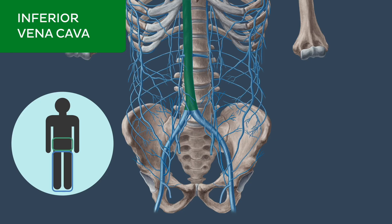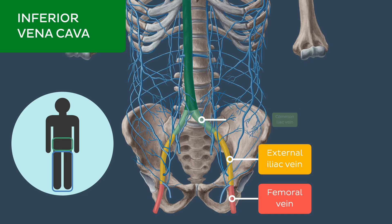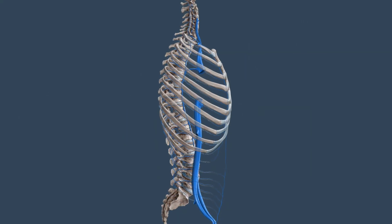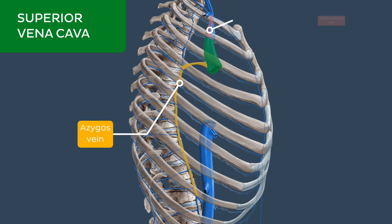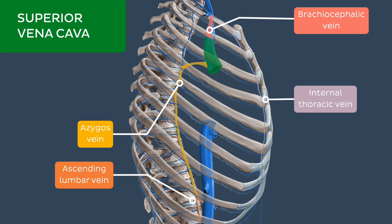It receives tributaries from the femoral vein and external iliac vein via the common iliac vein. From this lateral view, we can see that the superior vena cava also receives venous drainage from the regions of the abdomen via the azygous and brachiocephalic veins. The azygous and brachiocephalic veins receive venous blood from the abdominal wall through the ascending lumbar and internal thoracic veins, which we'll meet later on.